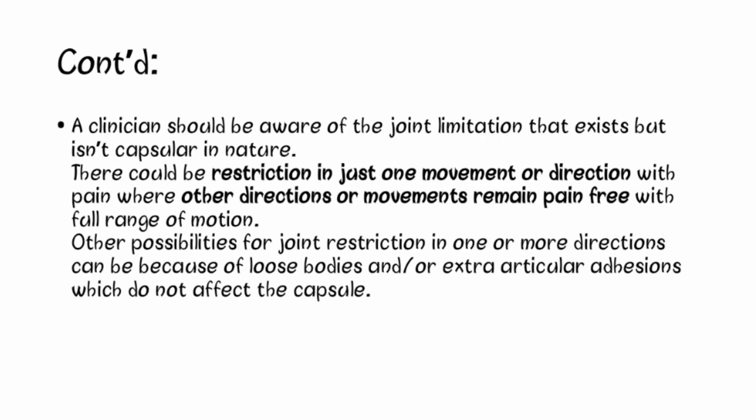A clinician should be aware of joint limitation that exists but isn't capsular in nature. For example, in the shoulder joint in cases of subacromial bursitis, abduction may be restricted but with minimal restriction in the rotation component. In such cases, other tissues such as ligaments could become adhered. There could be restriction in just one movement or direction with pain, while other directions remain pain-free with full range of motion. Other possibilities for joint restriction could be loose bodies or extra-articular adhesions which do not affect the capsule.